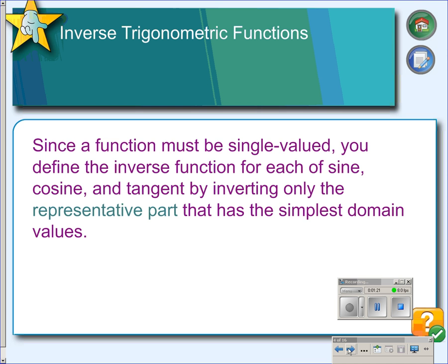We have to find a representative part. Since a function must have only one value, every x has only one y value, you define the inverse function for each sine, cosine, and tangent by inverting only the representative part that has the simplest domain values.